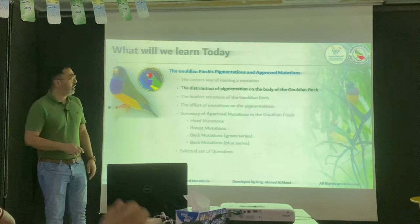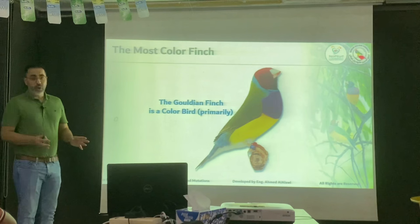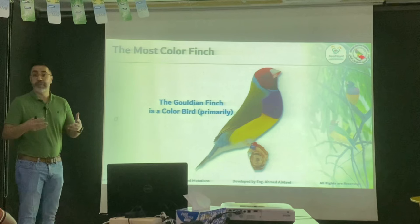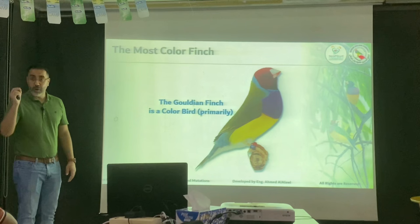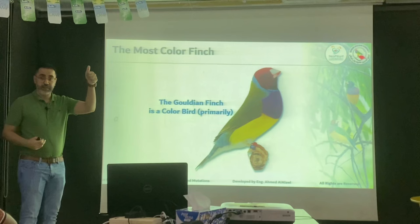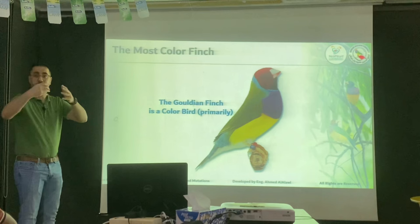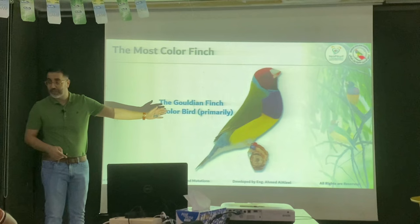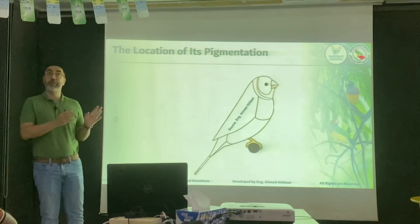The second topic is pigmentation. Do you all agree that the Gouldian finch is a color finch? It's not a model finch, not a size finch, not a feather type finch. Rainbow finch — color. Predominantly it's color. Our job is to take care of the color as a breeder, and then improve the model, the size, the head, the beak, and condition most importantly. But let's not forget — this is a color breed; it has seven colors. How does this bird look like when I strip all these colors?